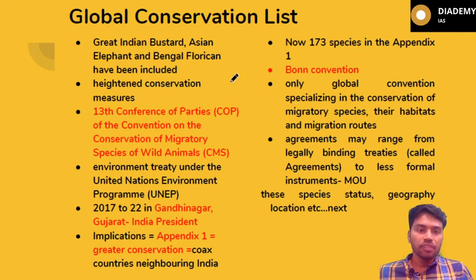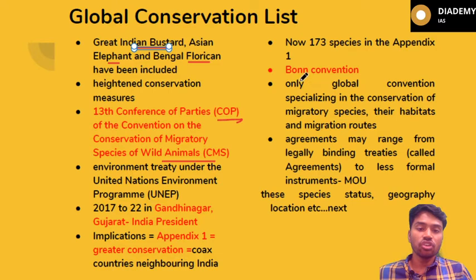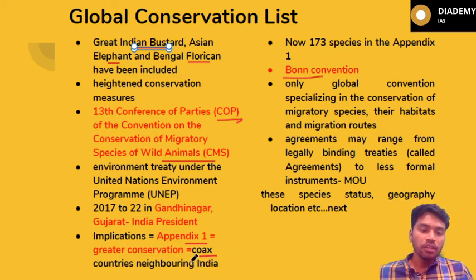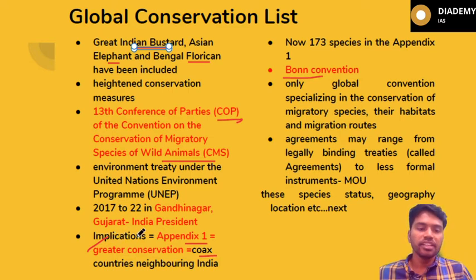Regarding the Global Conservation List: India has put forward the Great Indian Bustard, Asian Elephant, and Bengal Florican at the 13th Conference of Parties of the Convention on Migratory Species of Wild Animals, also known as the Bonn Convention. These three species have been included in Appendix I of this list, signifying greater importance and conservation priority. This means coaxing — that is, persuading — neighboring countries to conserve these species. UPSC has asked questions about what inclusion in such schedules or appendices signifies.